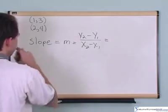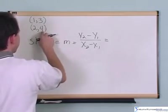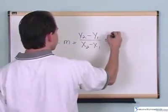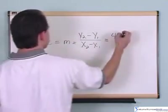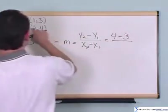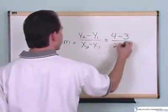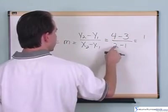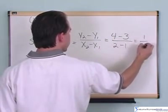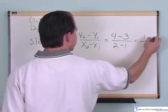Let's do that. Let's take Y2—I'm going to say 4 minus 3 over 2 minus 1. 4 minus 3 is 1, 2 minus 1 is 1, so the slope is 1.